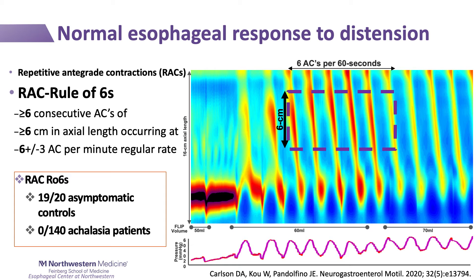FLIP provides a valid evaluation of esophageal motility, and a notable application is related to the impact of a normal FLIP study — including the normal contractile response defined by the RAC pattern and further by the RAC rule of sixes: six consecutive antegrade contractions of greater than six centimeters in axial length, at a regular rate of six plus or minus three antegrade contractions per minute.